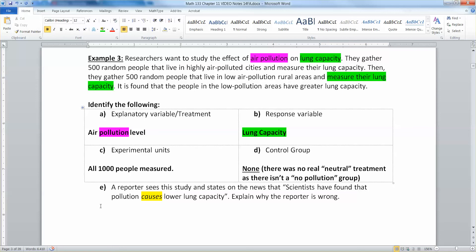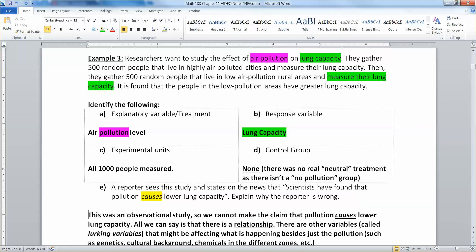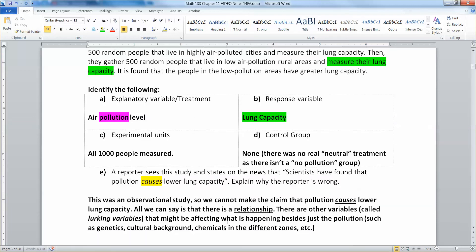Well, you can only make cause-effect arguments if you have an experiment. If you randomly placed the people into their areas and had them live there for a while and then gave them the lung capacity measurement. But if the researcher isn't the one controlling that placement, then that's no good. That's an observational study. And you can't make claims about causing lung capacity. All you can say is that there's a relationship. There could be other things that might be affecting what's going on, such as genetics, cultural background, chemicals in the different zones, et cetera.